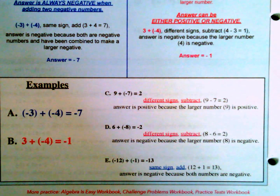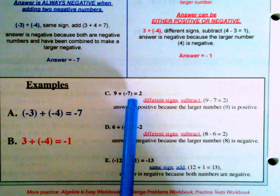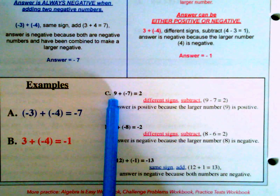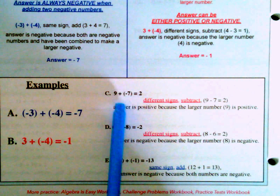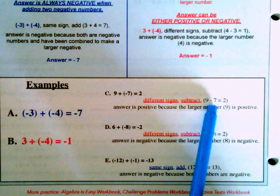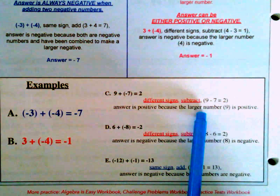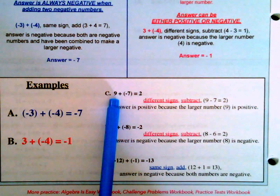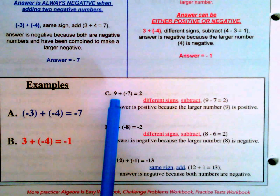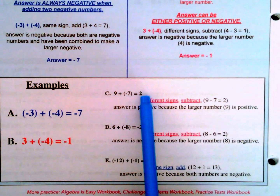Example C: 9 plus negative 7. These have different signs — positive and negative — so we subtract. 9 minus 7 equals 2. The answer is positive this time because the larger number, 9, is positive. So our answer is positive 2.